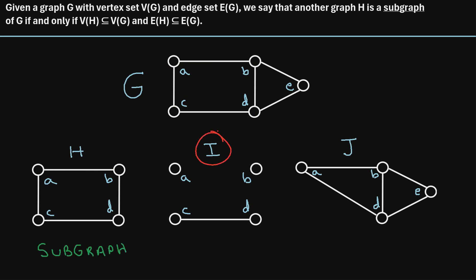Now let's check out graph I. This one also has four vertices: A, B, C, and D, all of which belong to graph G. We can see that this graph only has one edge that connects vertices C and D, and this exact same edge exists in the original graph G. So the edge set of I is a subset of the edge set of G, meaning this graph also meets the requirements for a subgraph.